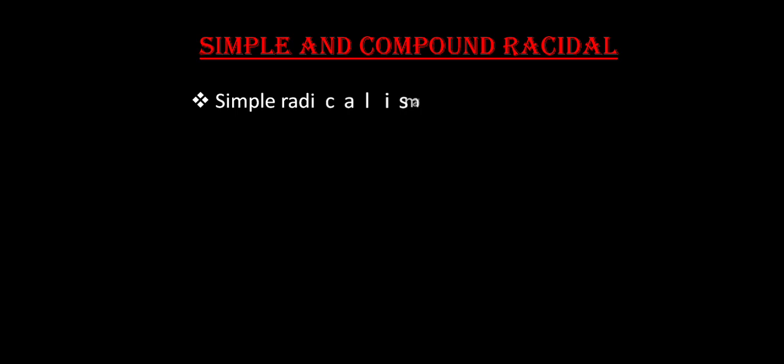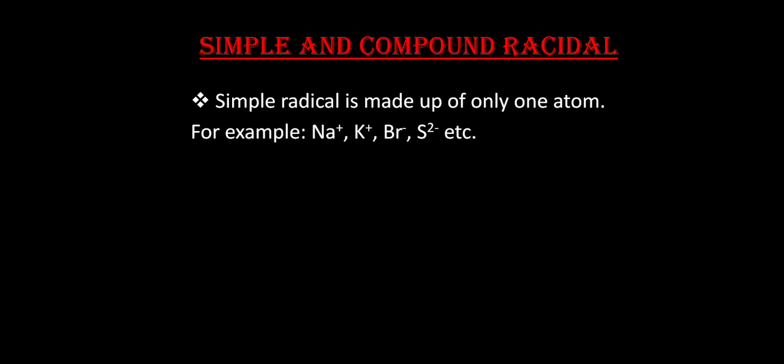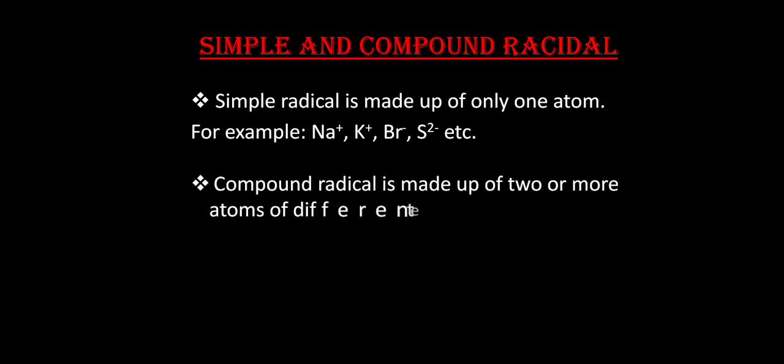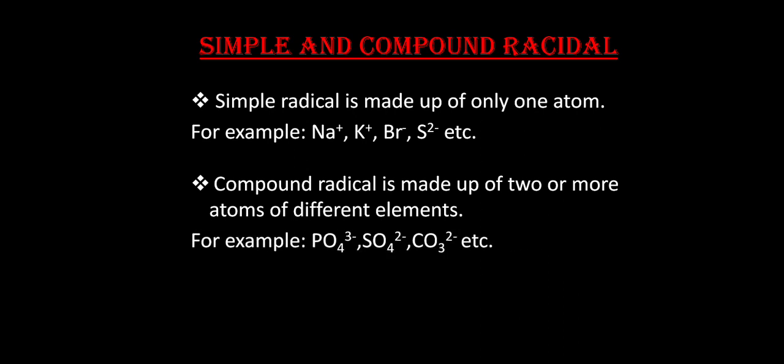The acid and basic radicals are classified into two categories: simple and compound radicals. Simple radicals are those which have only one atom — they may have a positive or negative charge but only one atom. For example, Na⁺, K⁺, Br⁻, S²⁻ are all simple radicals. Compound radicals are made up of two or more atoms of different elements, for example PO₄³⁻, SO₄²⁻, CO₃²⁻ — in PO₄³⁻ you have one phosphorus and four oxygen atoms combined with a common charge of 3−.